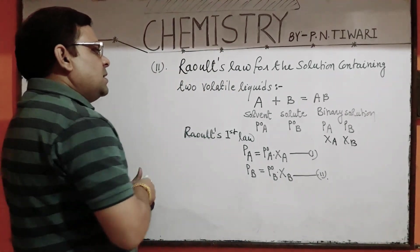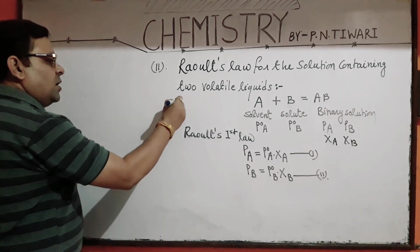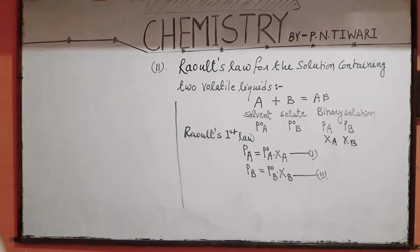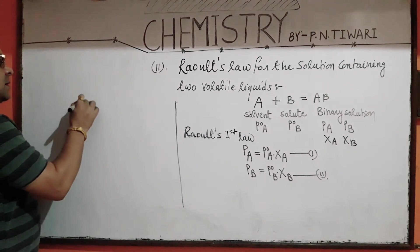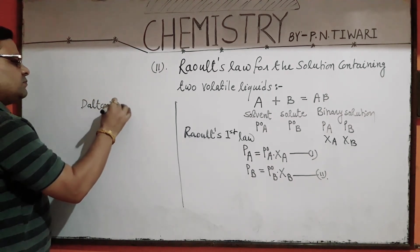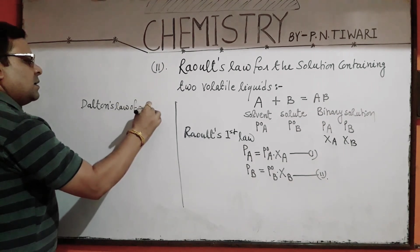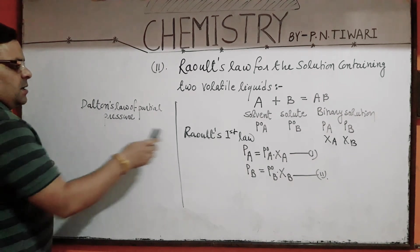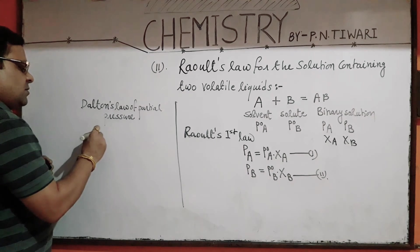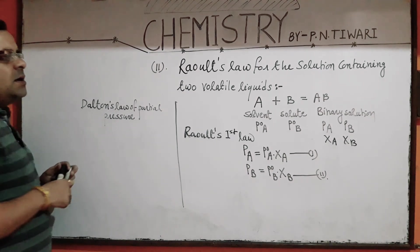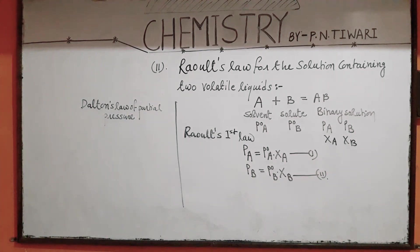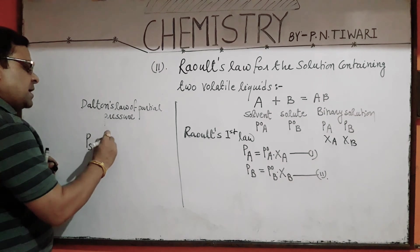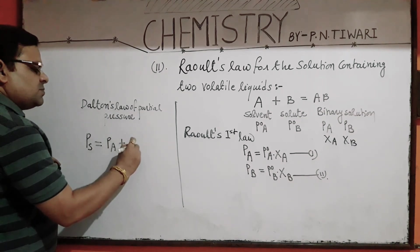Since both the components are volatile in nature in this solution, we apply Dalton's law of partial pressure, which you have already studied in eleventh class. According to Dalton's law of partial pressure, the total vapour pressure of the solution will be equal to the sum of the vapour pressures of each component present in the solution, because both components are volatile in nature.